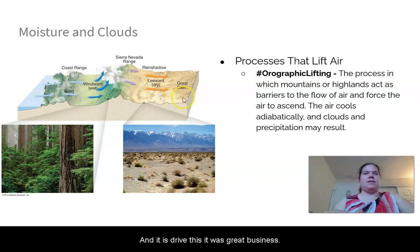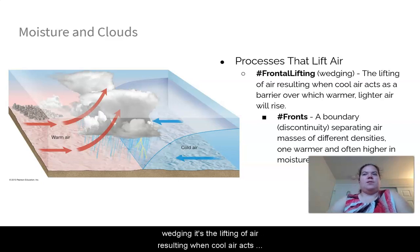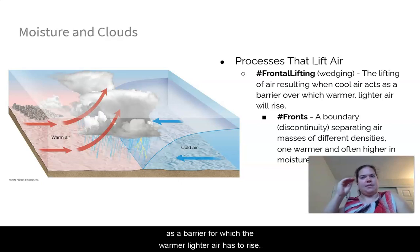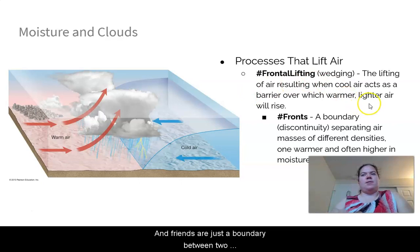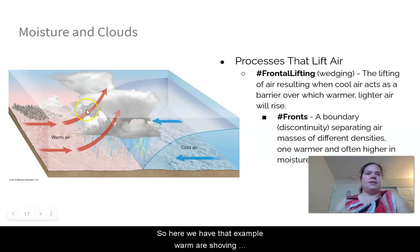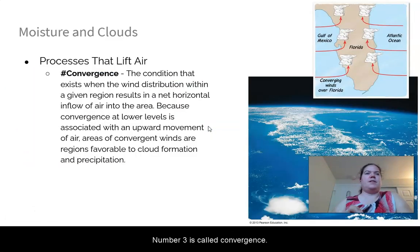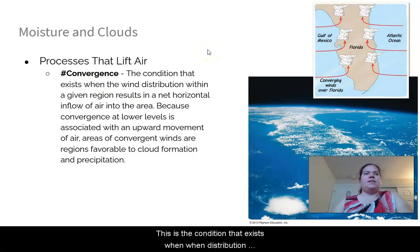Number two is frontal lifting, also called frontal wedging — the lifting of air when cool air acts as a barrier that warmer, lighter air must rise over. Fronts are boundaries between two air masses with different densities — one is usually warmer or has higher moisture content than the other. Here we see warm air shoving up over cold air.